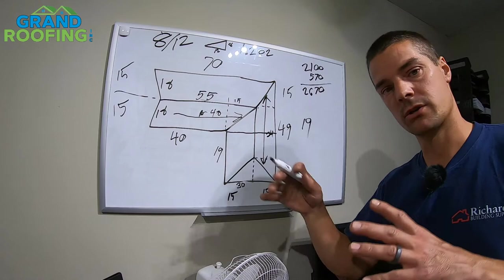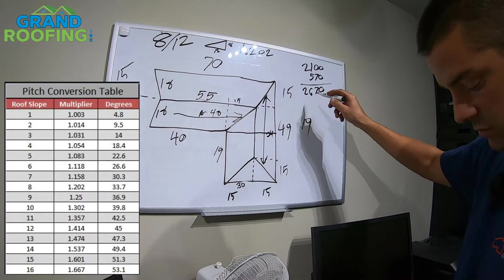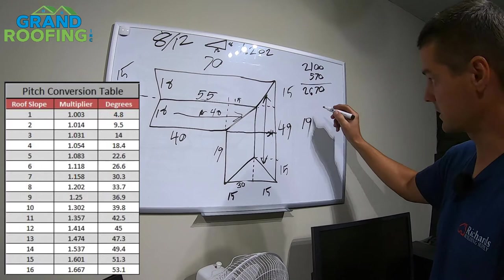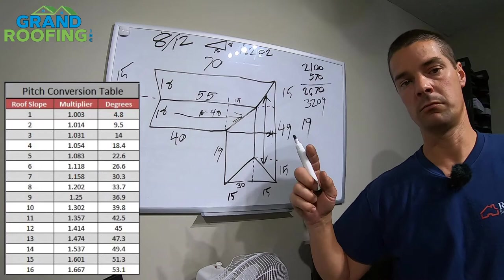I'll leave a card or a picture on the screen somewhere where you can get your rise. Basically any time you go steeper and the steeper you go, the more pitch factor you're going to need. So remember I told you earlier, 1.202. If you take that number, 26 times 1.202, it'll give you the pitch factor of 3209. Now you've got 32 square. So 32 square is what this is.